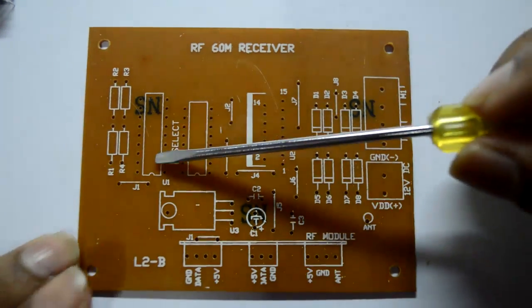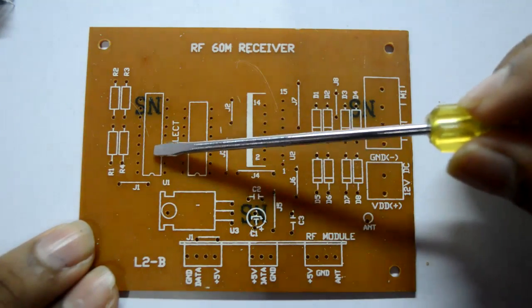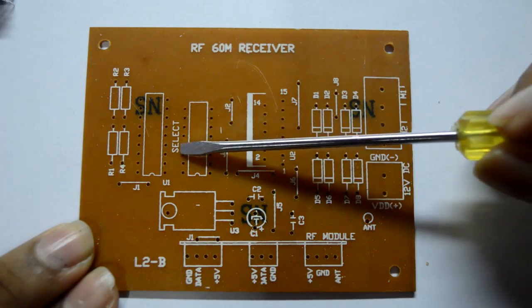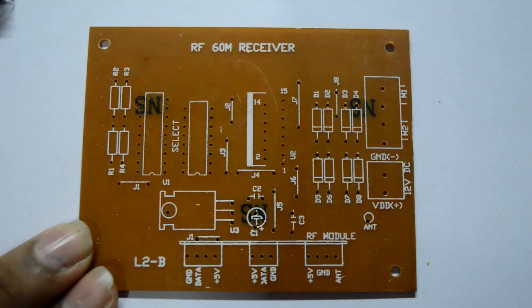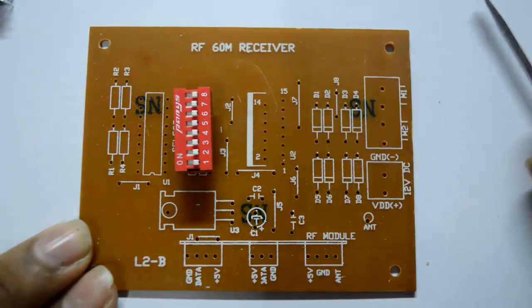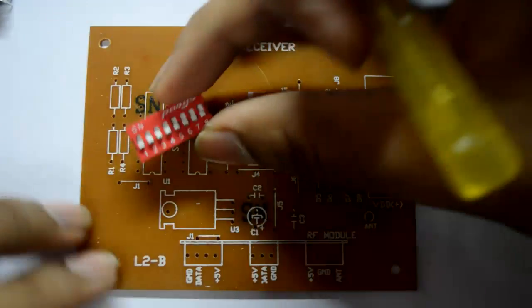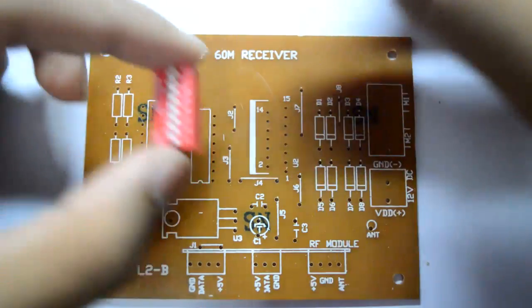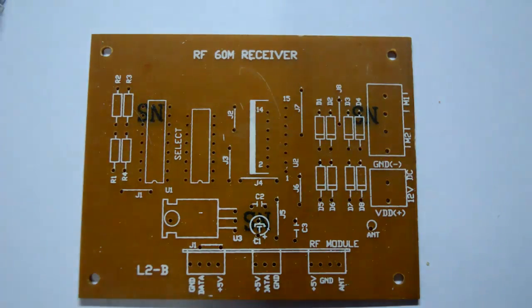Over here we are having some slots for the decoding IC, this is HT-12D, the name of the IC. Here you can see the word select has been labeled, so this is basically the DIP switch, so you have to move this up and down to keep it high or low. I'll explain later what I am talking about.